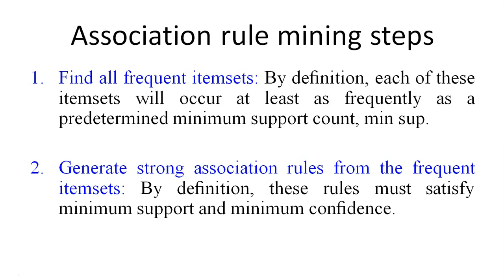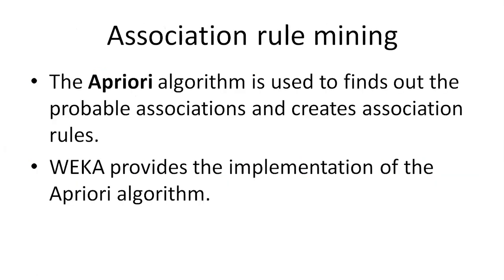The next step is to generate strong association rules. An association rule satisfies the minimum confidence value and is always in the form A implies B. The a priori algorithm is used to find associations and create association rules. This algorithm identifies the frequent item set as well as the association rules.